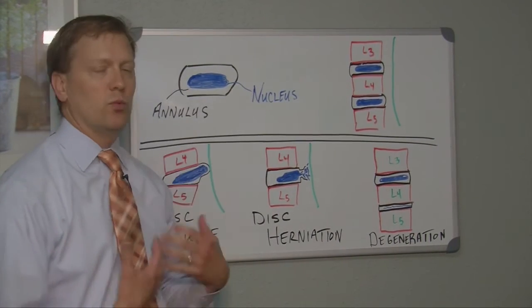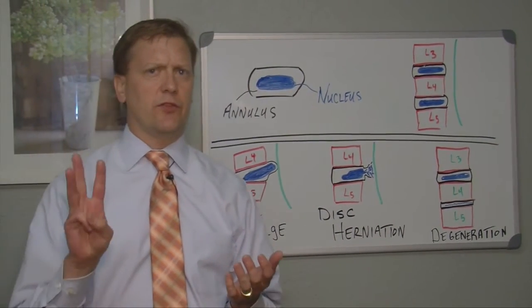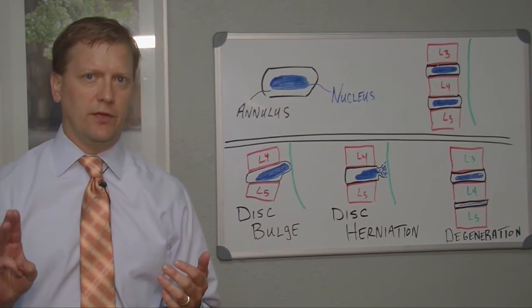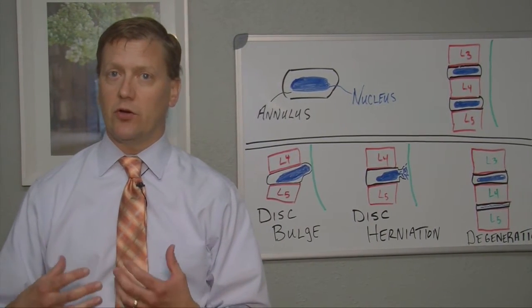So what can go wrong with the disc? There's mainly three things that can go wrong with the disc: you can get a disc bulge, you can get a disc herniation, and thirdly, you can end up with what's called disc degeneration.